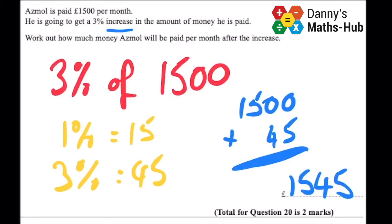Two marks there. So we'd get one mark for finding out what 3% is and one mark for adding it on and getting 1,545.